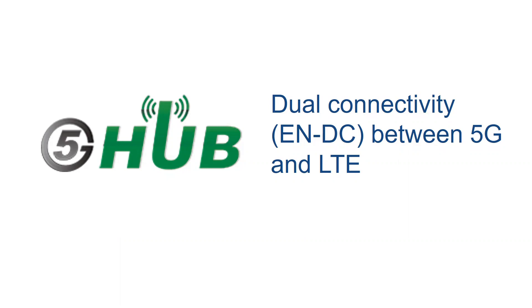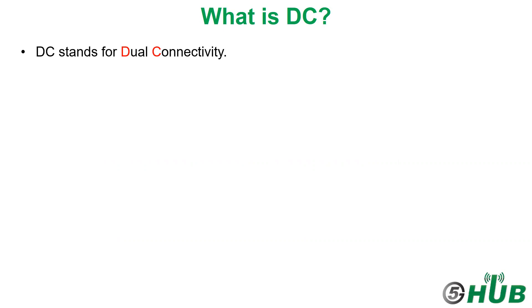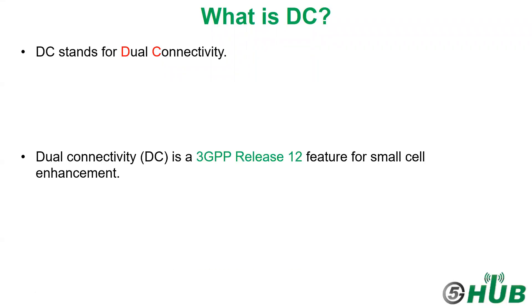At first, we need to define what is DC or what is dual connectivity. DC stands for dual connectivity and it's a feature in 3GPP Release 12 for cell enhancement.